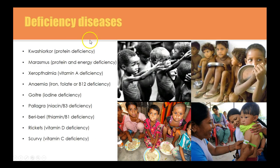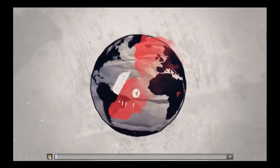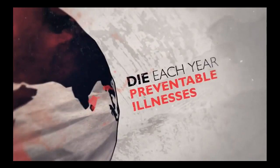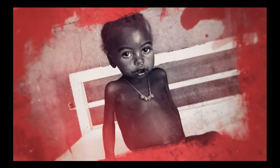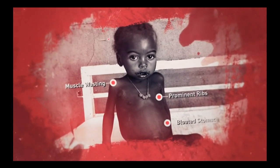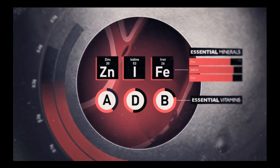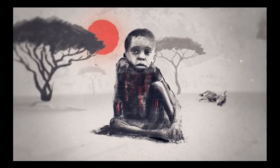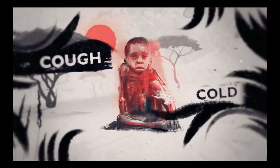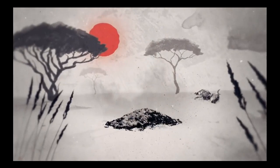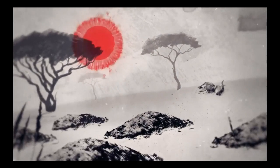There are a whole series of deficiency diseases, which we've talked about when covering micronutrients. Around the world, 7.6 million children under five die each year from preventable illness. In nearly a third of cases, the root cause of death is hunger — not just starvation. Deprived of essential minerals and vitamins, children are left so weakened they can't fight off diseases, turning ordinary childhood illnesses into killers. For millions of children every year, hunger is a death sentence.